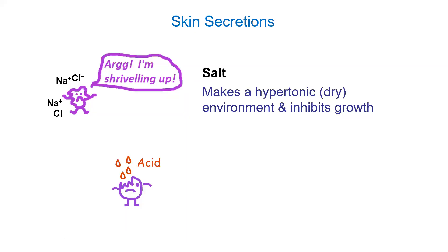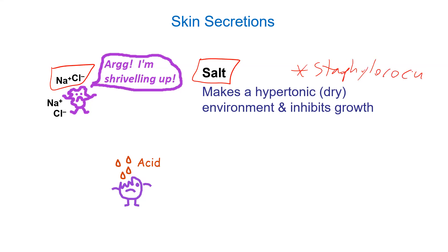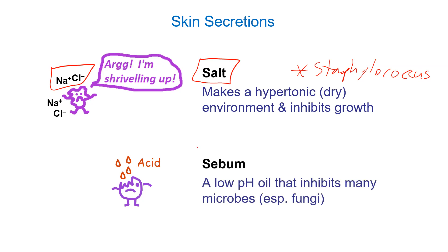The skin is a physical barrier, and it has all sorts of secretions that help keep it pathogen-free. Our skin produces a lot of salt — sodium chloride, NaCl — which makes the environment dry and inhibits the growth of most microorganisms. The exception, as we've talked about, is Staphylococcus, which likes to live on a salty, dry area. But most other organisms cannot survive there for very long. Something else our skin makes is called sebum, which is an oily substance with a low pH, meaning it's acidic — and that also prevents growth of a lot of bacteria. Most bacteria like a neutral pH of 7.